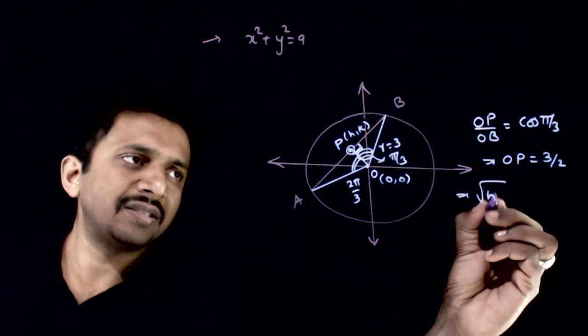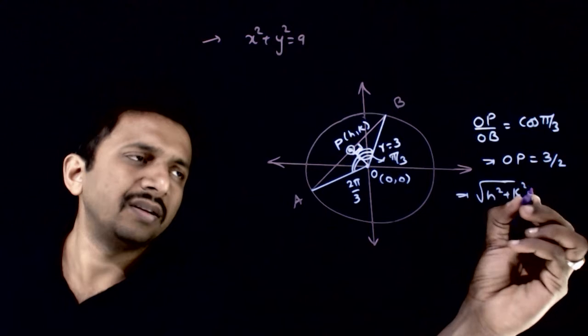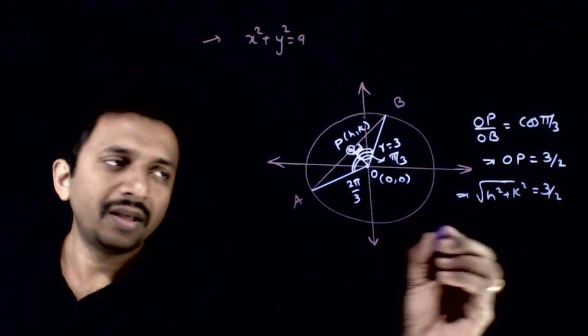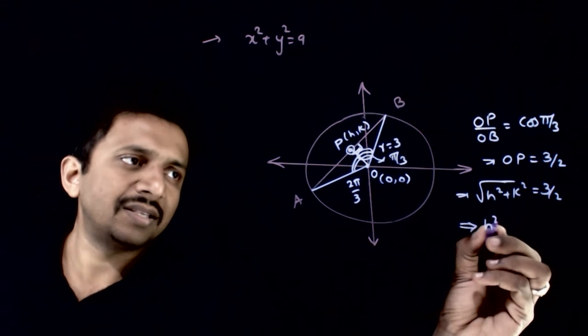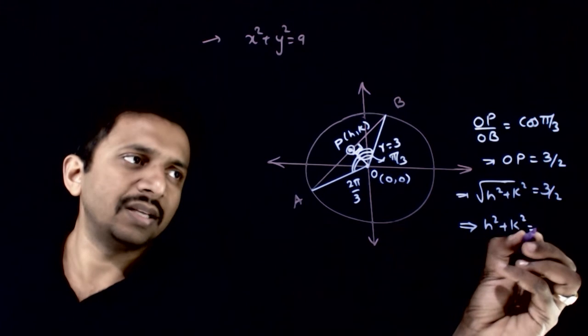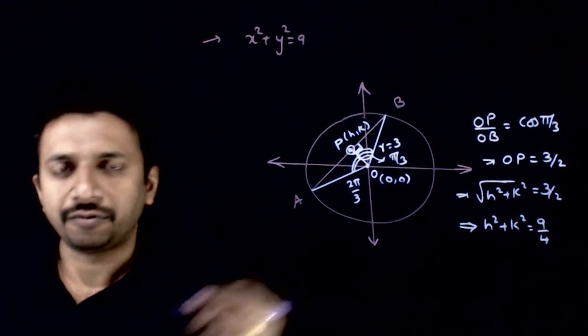This implies root of h square plus k square is equal to 3 by 2. And this implies h square plus k square is equal to 9 by 4.